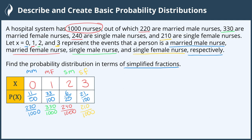We were told this is a probability distribution, but we can verify that by adding all the fractions together. Adding 220 + 330 + 240 + 210 equals 1,000, and 1000/1000 = 1. This verifies it is a valid probability distribution — it adds to 1 and each probability is between 0 and 1. So we are done creating our probability distribution.